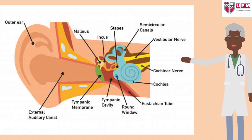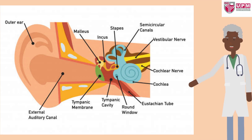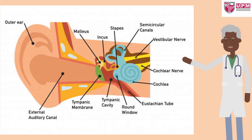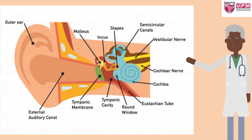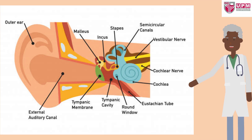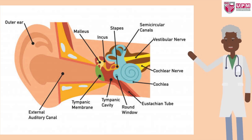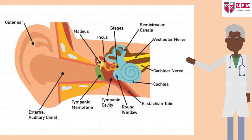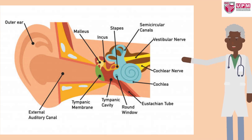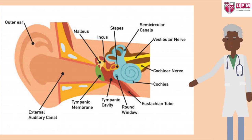At birth, each normal ear has about 12,000 sensory cells called hair cells, which sit on a membrane that vibrates in response to incoming sound. Each frequency of a complex sound maximally vibrates the membrane at one location. Because of this mechanism, we hear different pitches within the sound. A louder sound increases the amplitude of the vibration, so we hear loudness.